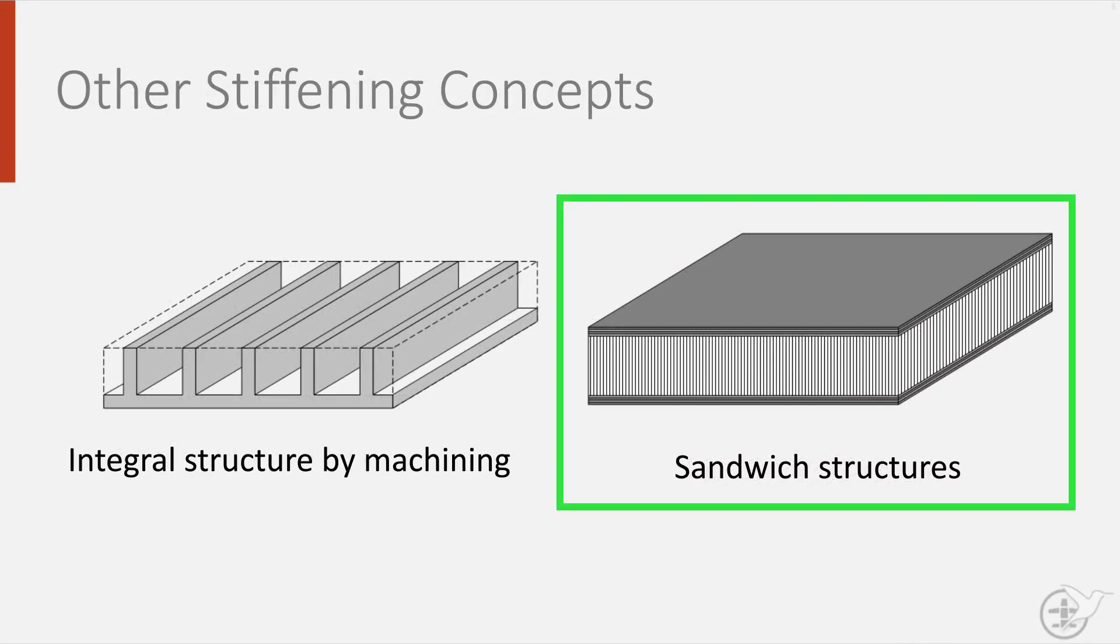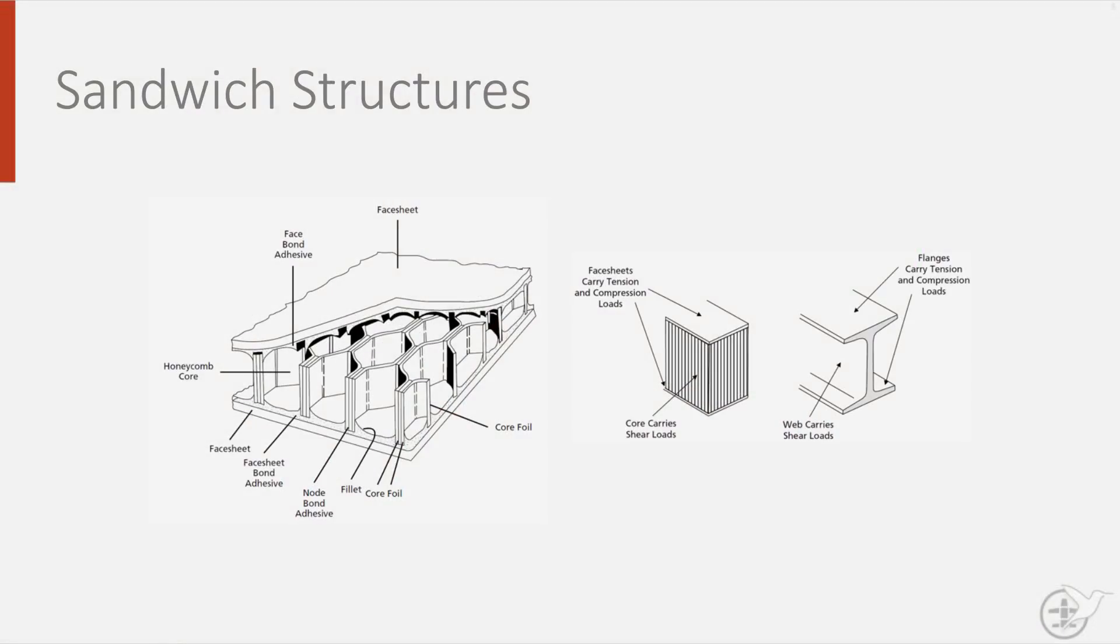A sandwich structure, such as this one, consists of two smooth faceplates made from metal or composites with in between a low density core. In fact, you probably have seen it before in your average cardboard box, which is also a sandwich structure. The core of these structures can be honeycomb made from either polymers or metals or made of foam.